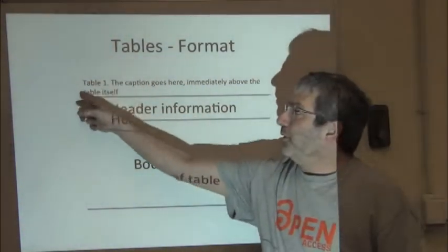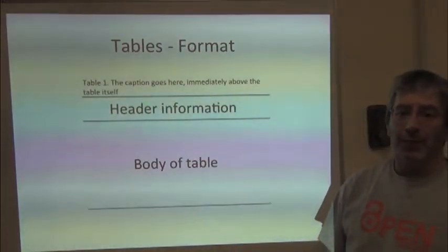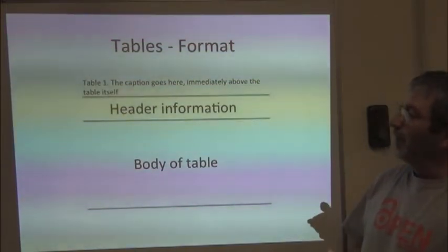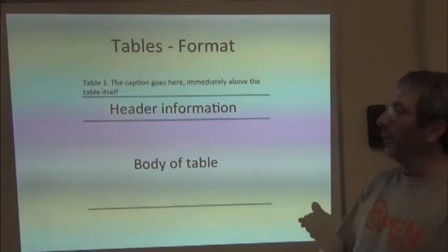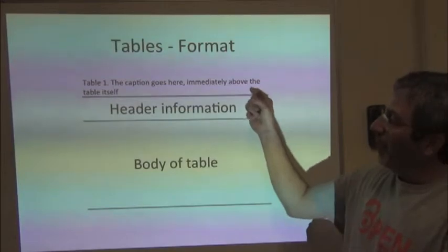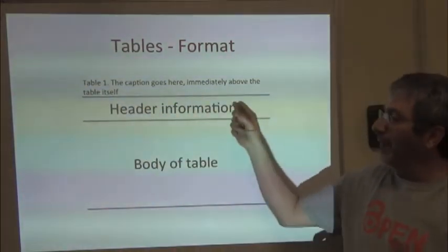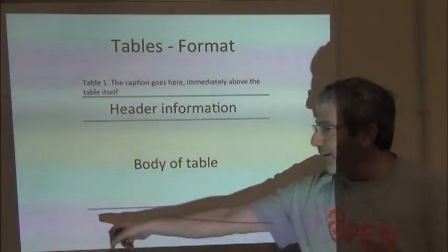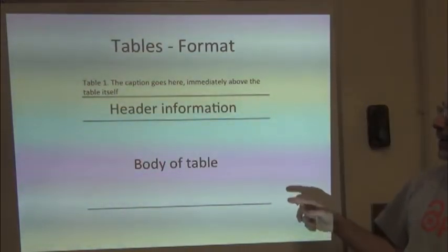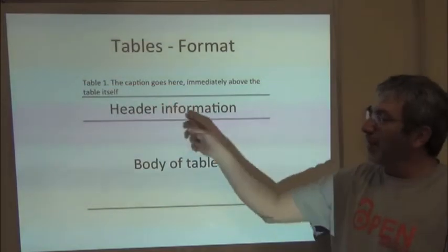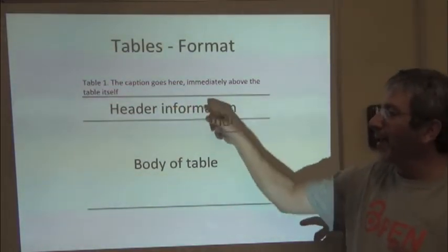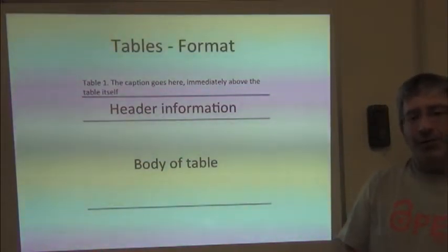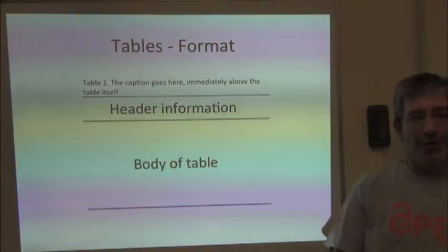The caption goes right above the table. Again, this is one table per sheet of paper at the end of your manuscript. The caption goes above the table. Then you have one horizontal line and the header and another horizontal line and then the body and then a final horizontal line. In some more complex tables, you may be able to add some horizontal lines to demonstrate hierarchical relationships among header levels.